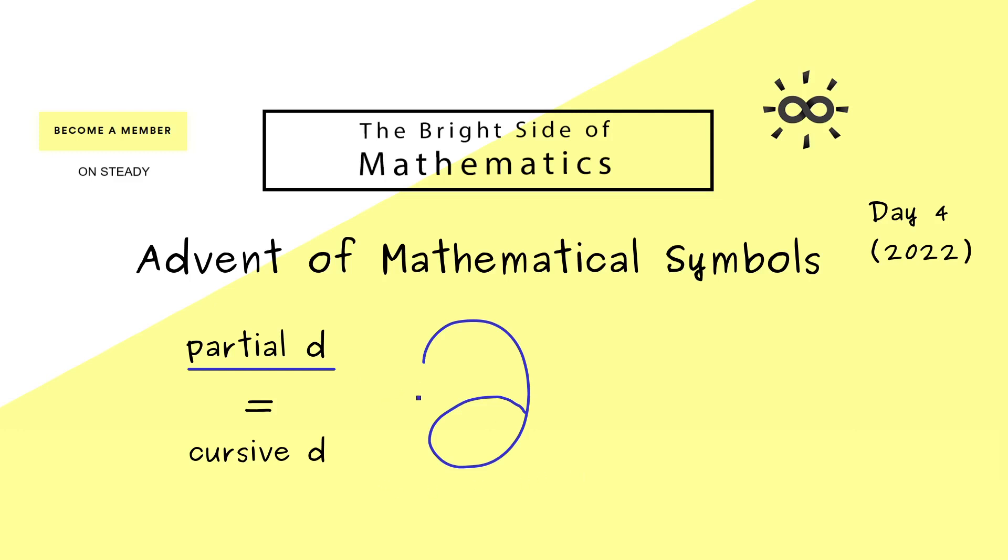Indeed, some people just call this symbol del, but this can be confused with the Nabla operator. Therefore, if you pronounce this letter here, you can simply say d.